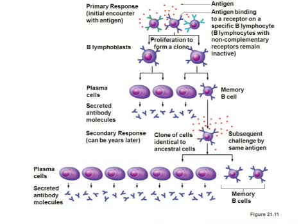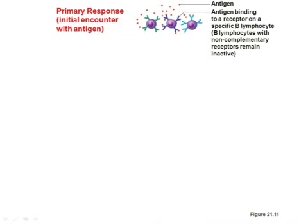Looking at this diagram: the little red dot represents an antigen. The Y-shaped structure on the B cell is an immunoglobulin bound to the B cell as a receptor — that is essentially an antibody. Notice that only the B cell in the middle has the right-shaped antibody to bind the antigen. The antigens don't bind to the ones on the left or right because the shape isn't right.